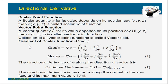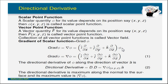Now we learn the concept of the gradient of a scalar function, also called grad phi. Grad phi is defined as del phi, where the del operator is (i-bar ∂/∂x + j-bar ∂/∂y + k-bar ∂/∂z). Applying this to phi gives: grad phi equals i-bar·(∂phi/∂x) plus j-bar·(∂phi/∂y) plus k-bar·(∂phi/∂z).